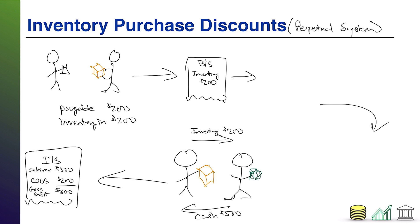In these pay-later situations, the supplier often offers you a discount if you pay early. We are sitting down and writing a check, and we are only going to write that check for $180. The reason is we've made a deal with our supplier: pay early and you save $20.